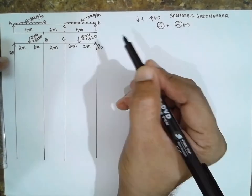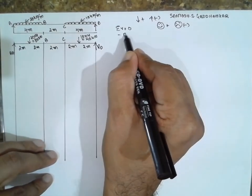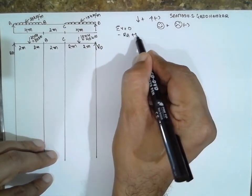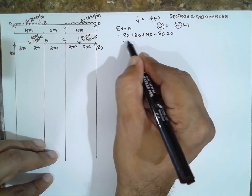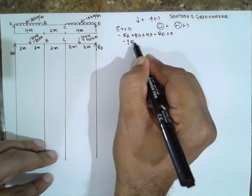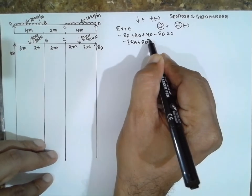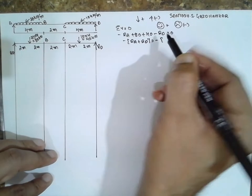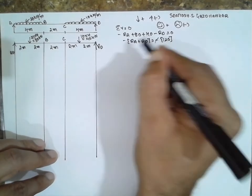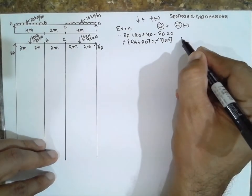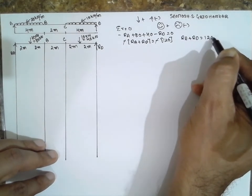10 x 4 equals 40 kN, 2 m this side, 2 m this side. The reaction will be upward, RD. Now we are finding the reaction. Sum of the vertical force is equal to 0: minus RA plus 80 plus 40 minus RD equals 0. Minus taken common, RA plus RD equals 120, equation 1.